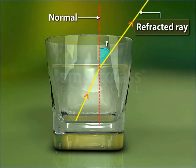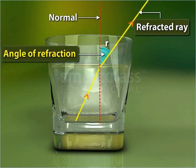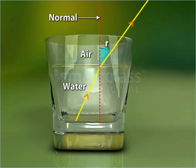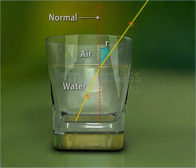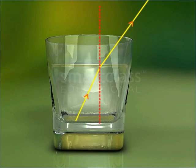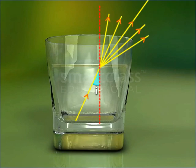The angle between the refracted ray and the normal at the point of incidence is called the angle of refraction. For a pair of transparent media, for light of a given color and the same angle of incidence, do you think the angle of refraction can have random values?